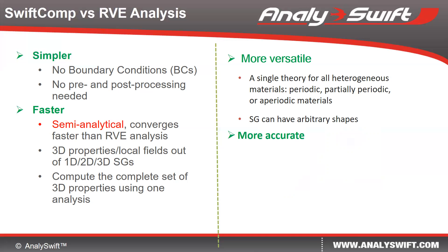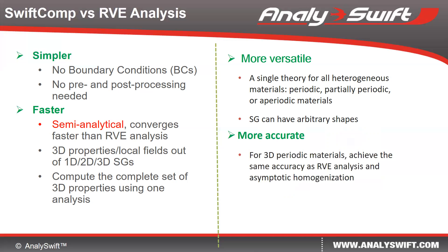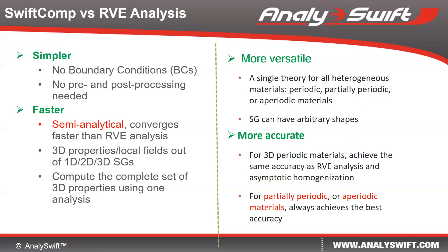This method is also more accurate. It can reproduce the RVE analysis with periodic boundary conditions and asymptotic homogenization for 3D periodic materials. For other situations like partially periodic or non-periodic materials, it will always achieve the best accuracy because we use the principle of minimal information loss.